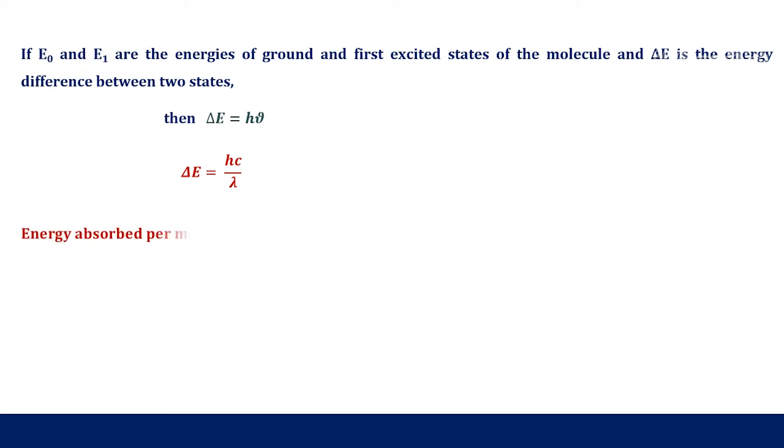We know that nu equals C by lambda. By substituting this value, we can get delta E equals H into C by lambda. Energy absorbed per mole equals Na into H into C by lambda, where Na is Avogadro number which is equal to 6.02 into 10 power 23, H is Planck's constant which is 6.625 into 10 power minus 34 joule second, and C is speed of light which is 3 into 10 power 8 meter per second.